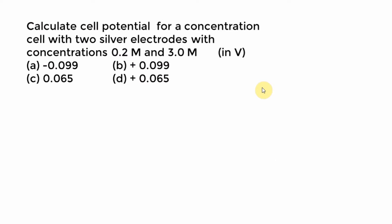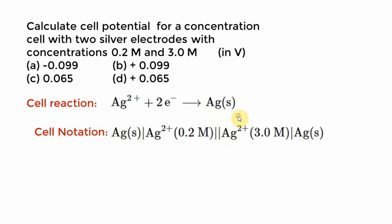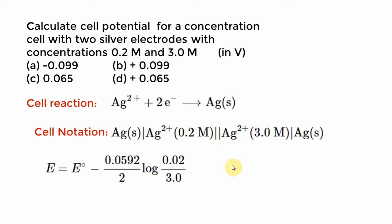Calculate the cell potential for a concentration cell with two silver electrodes at concentrations 0.2 M and 0.3 M. They don't give you E° for silver because it cancels out. Write the basic reaction — reduction at cathode and oxidation at anode: Ag → Ag⁺ + e⁻. The cell notation shows the same cell on both sides with different concentrations. Writing the Nernst equation: log(2 × 10⁻² / 3 × 10⁻¹) — using log 2 ≈ 0.3 and log 3 ≈ 0.5 you can calculate the E value.